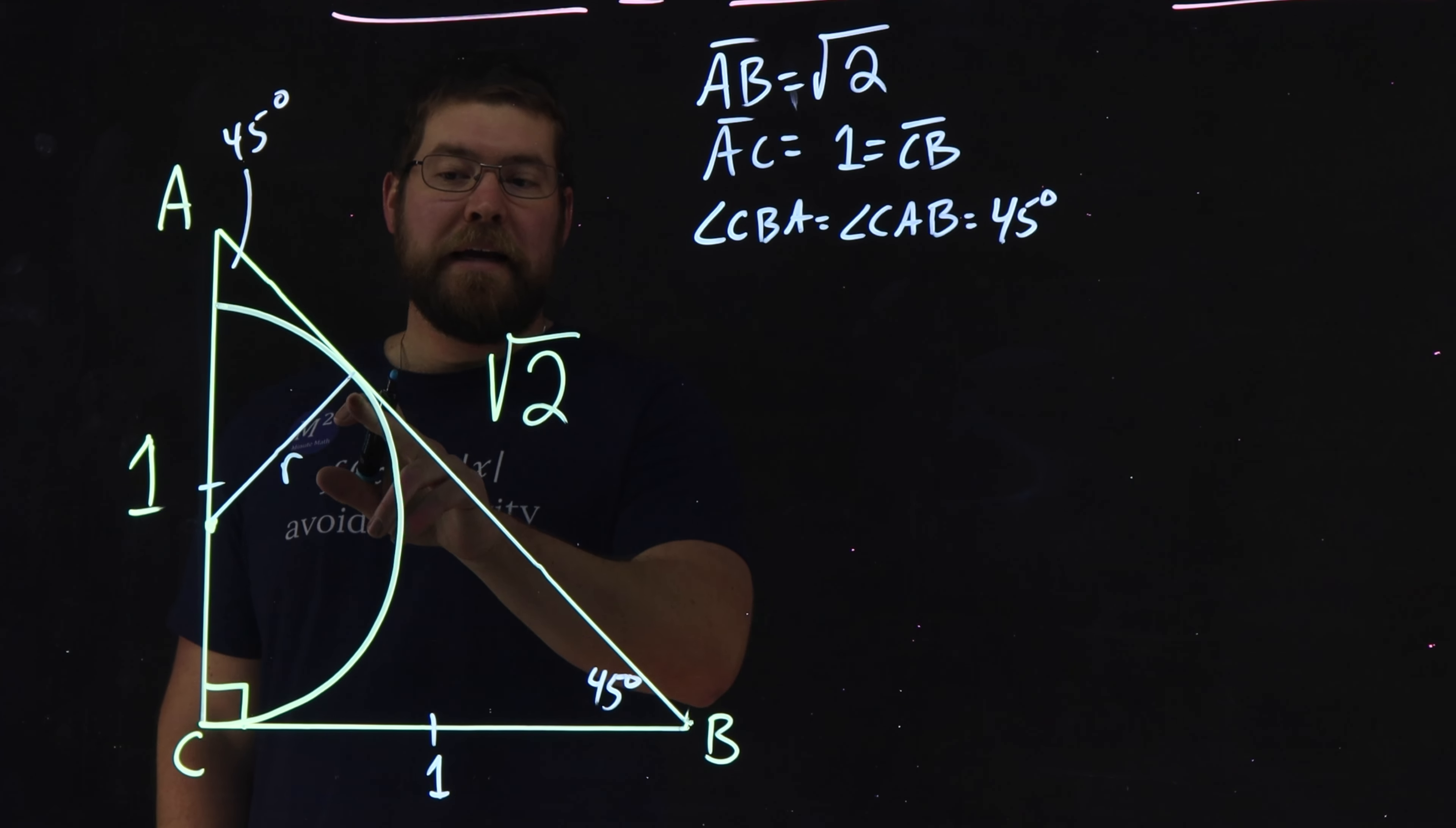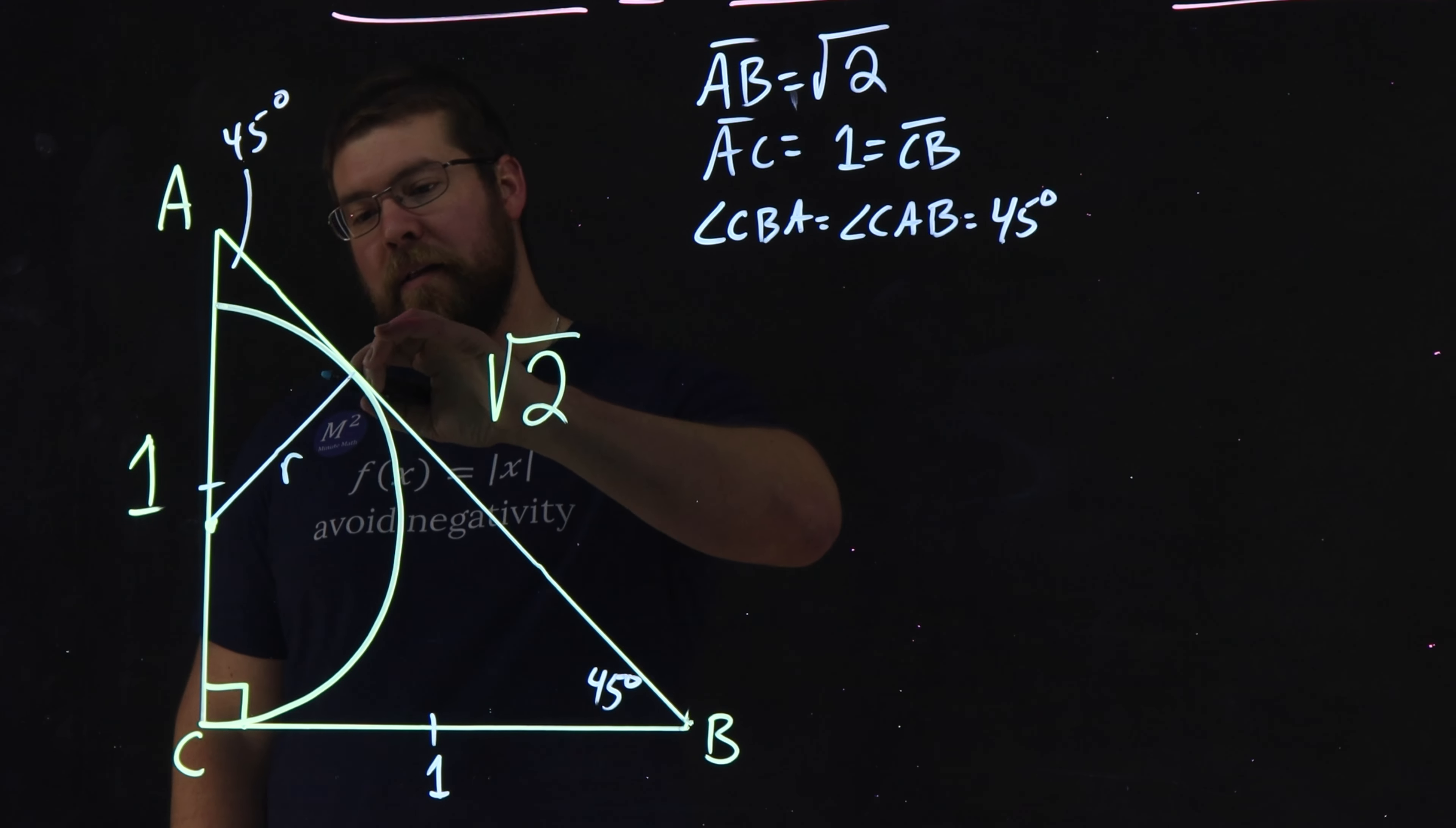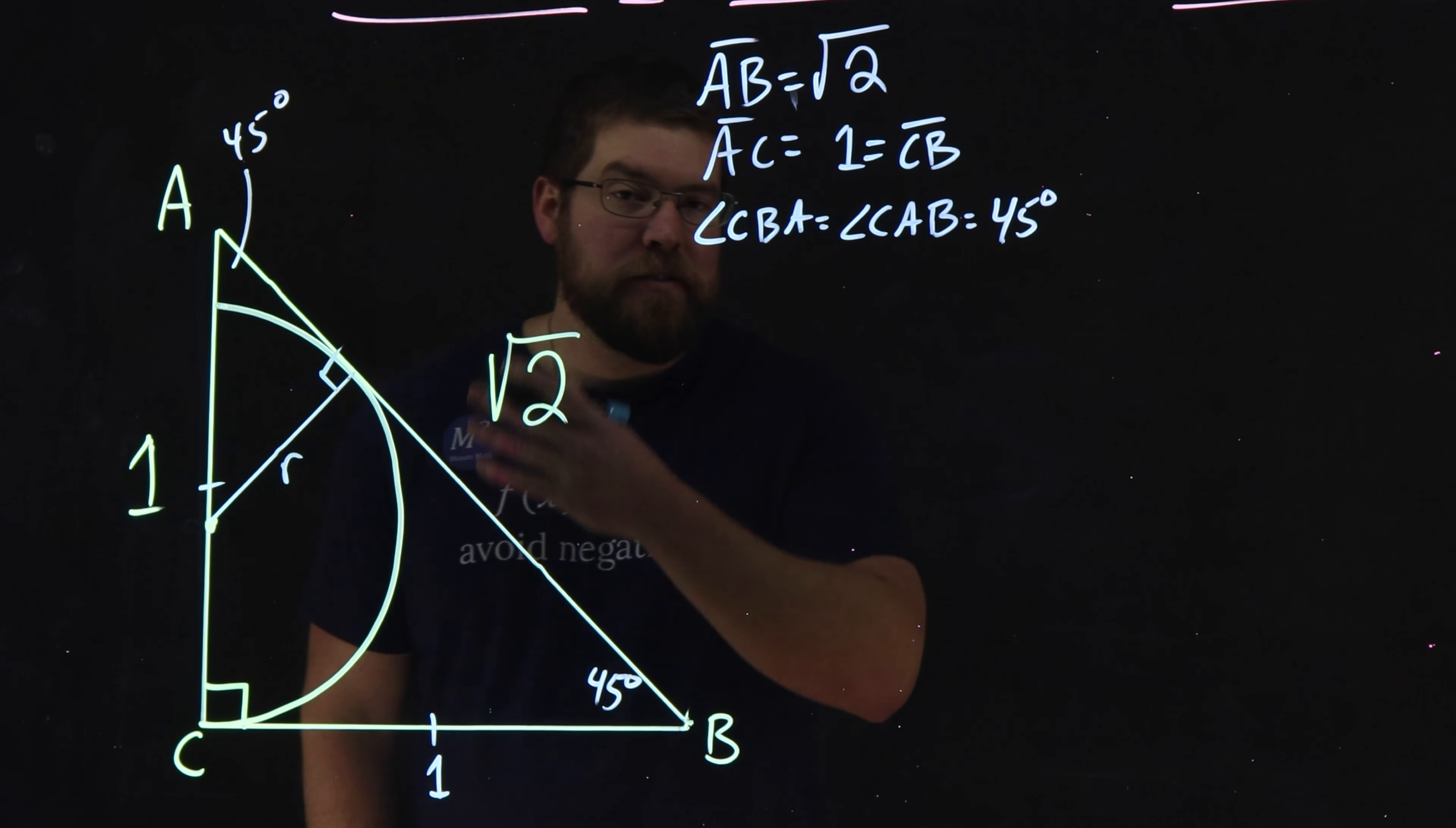Now, we know at this point it's tangent to a circle, meaning we know that the radius here that's tangent goes in perpendicular. It's going to be a right angle right there.